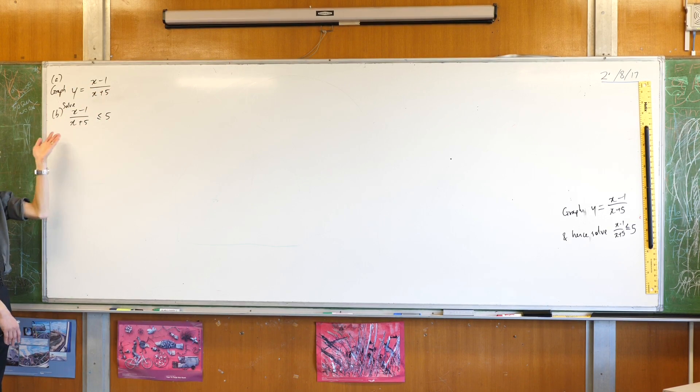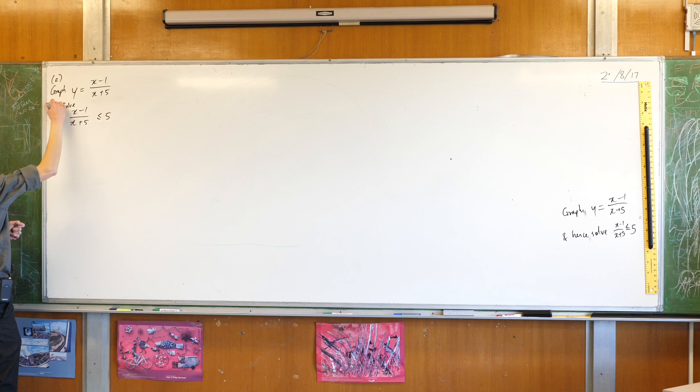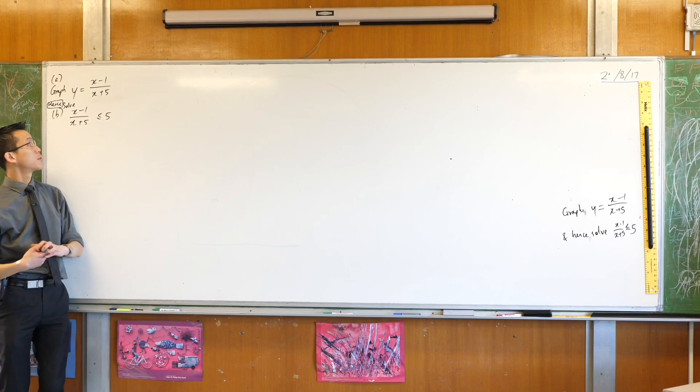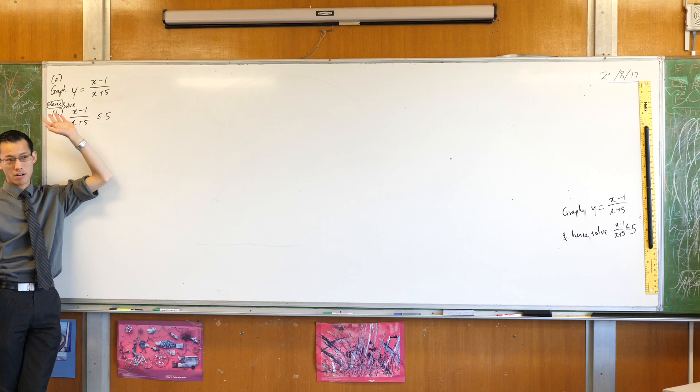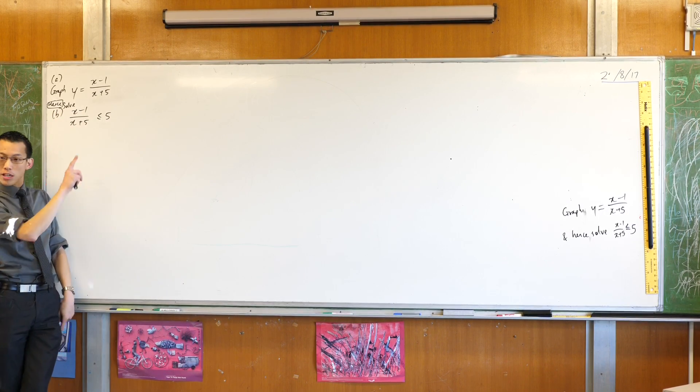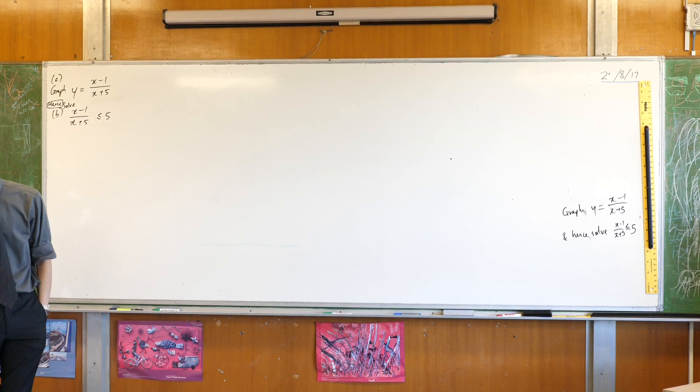They want us to graph and then solve this inequality on the basis of the graph. Sometimes it'll say hence. If you're lucky it'll say hence or otherwise, which means that even if you look at something like this and you're like gross, I hate graphing stuff, takes me forever, I'm not very good at it. Hence or otherwise means you can still solve this algebraically. It's just very awkward.